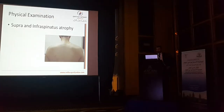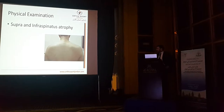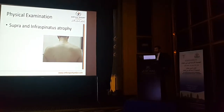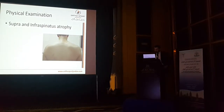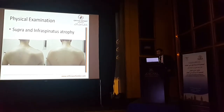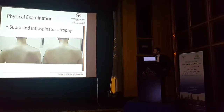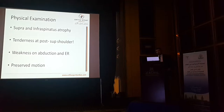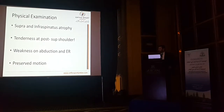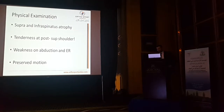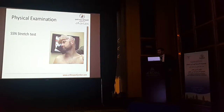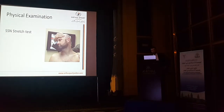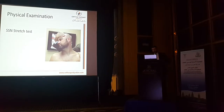On physical examination you see wasting or atrophy of the supraspinatus and infraspinatus muscles. However, atrophy of the supraspinatus may not appear obvious because it lies under the trapezius. Ask the patient to do external rotation to see if there is scapular dyskinesia. Winging of the scapula may indicate an associated injury to the long thoracic nerve. There is tenderness, sometimes elicited over the suprascapular notch, and weakness on abduction and external rotation. Fortunately, most patients have preserved motion, unlike rotator cuff pathology. There is a described suprascapular nerve stretch test: take the patient's head in lateral rotation away from the affected shoulder, then depress and retract the scapula. If this elicits pain, it may be a positive test.